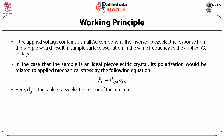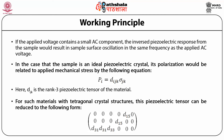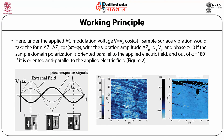For materials with tetragonal crystal structures, the piezoelectric tensor can be reduced to a simplified form. Under the applied AC modulation voltage V = V0·cos(ωt), sample surface vibration would take the form delta Z = delta Z0·cos(ωt + φ), with vibration amplitude delta Z0 = D33·V0 and phase φ = 0° if the sample domain polarization is oriented parallel to the applied electric field, or φ = 180° if it is oriented anti-parallel to the applied electric field, as shown in the figure.